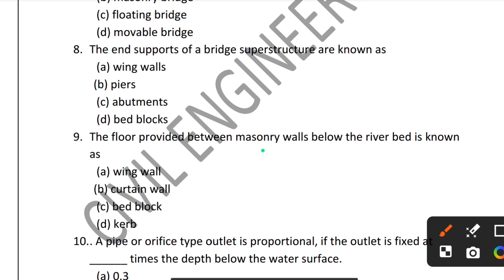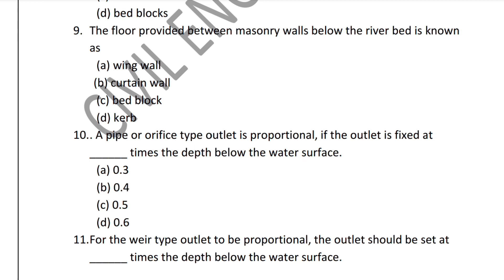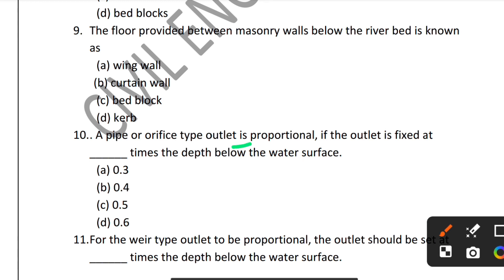Question 9: The floor provided between masonry walls below the river bed is known as what? The floor provided between masonry walls below the river bed is called a bed block. Option C — bed block — is the correct answer.